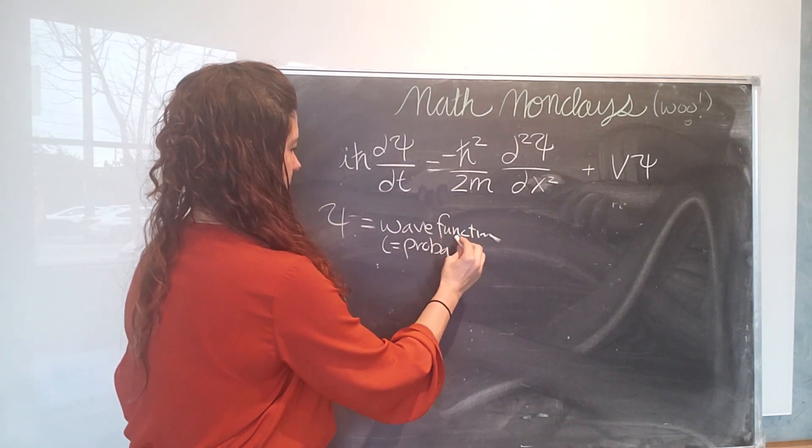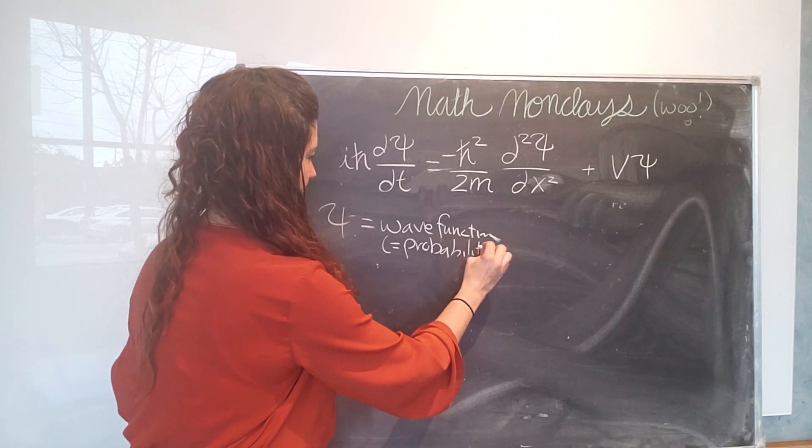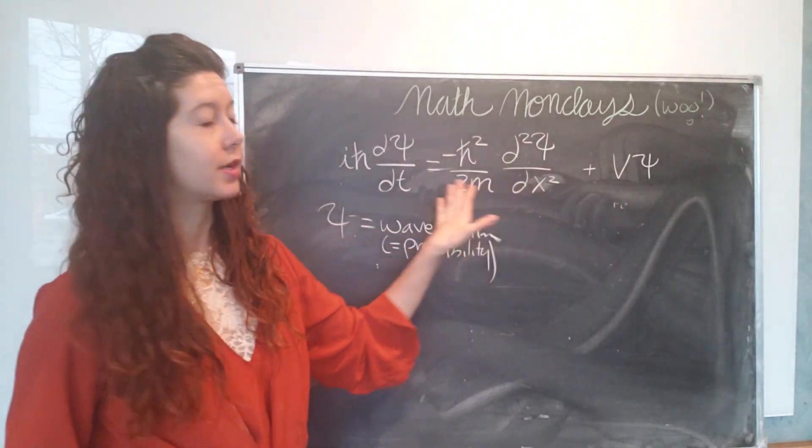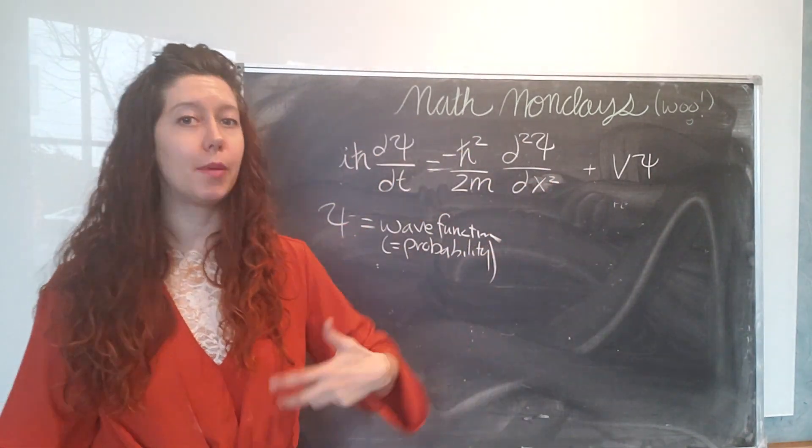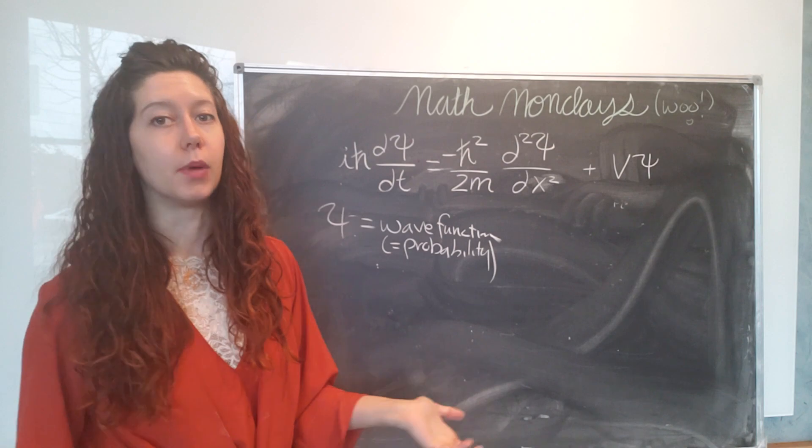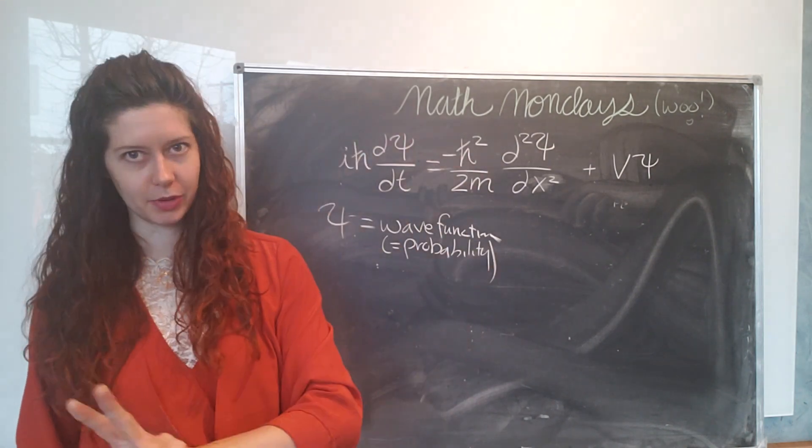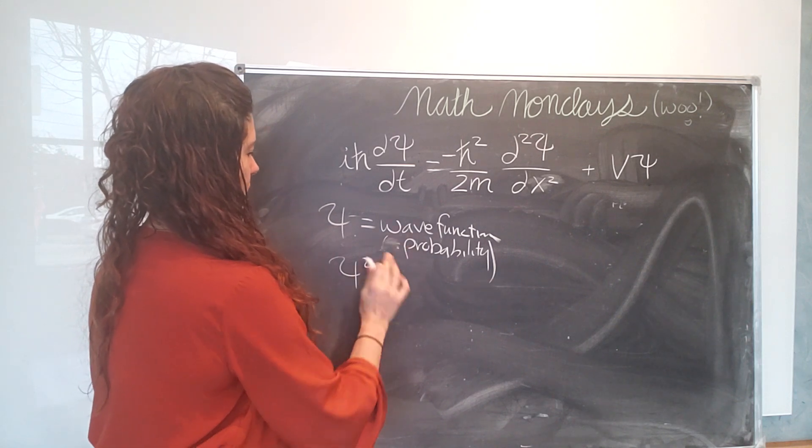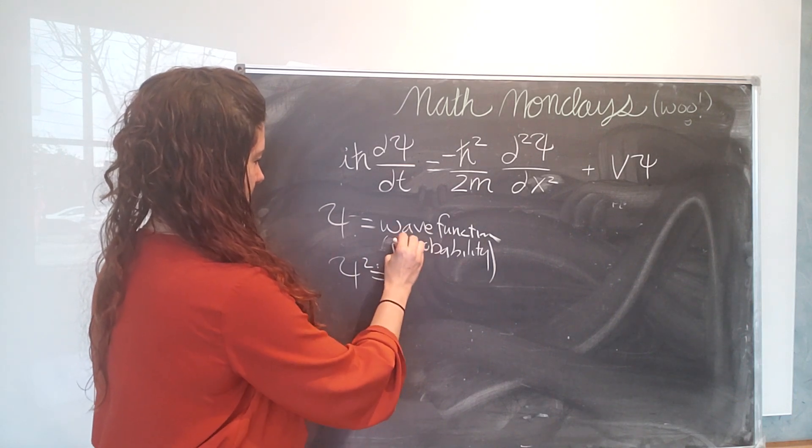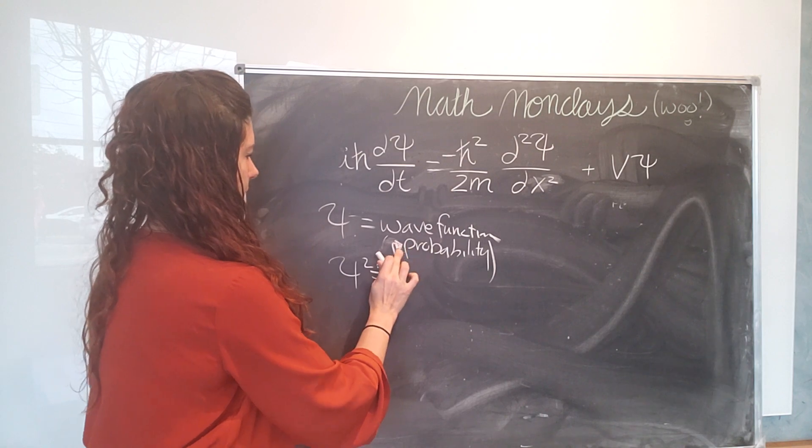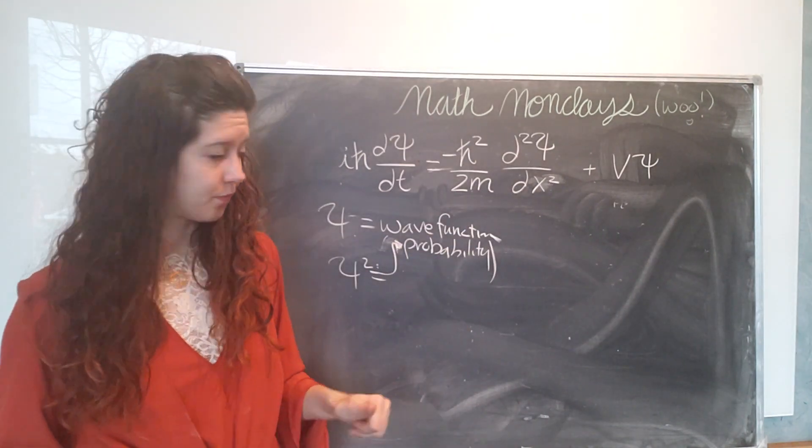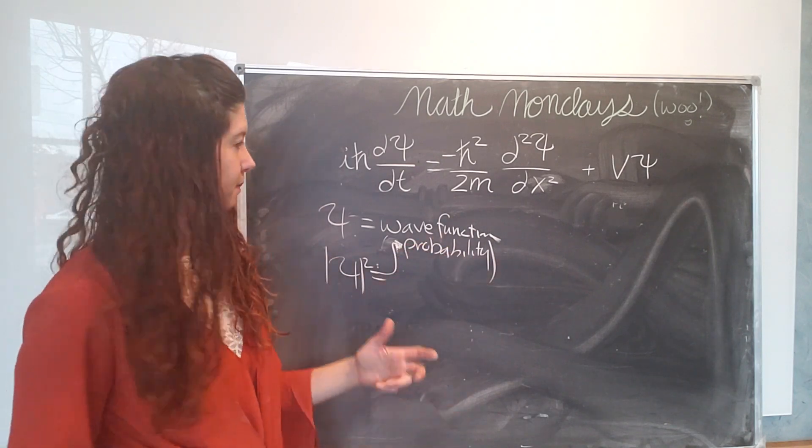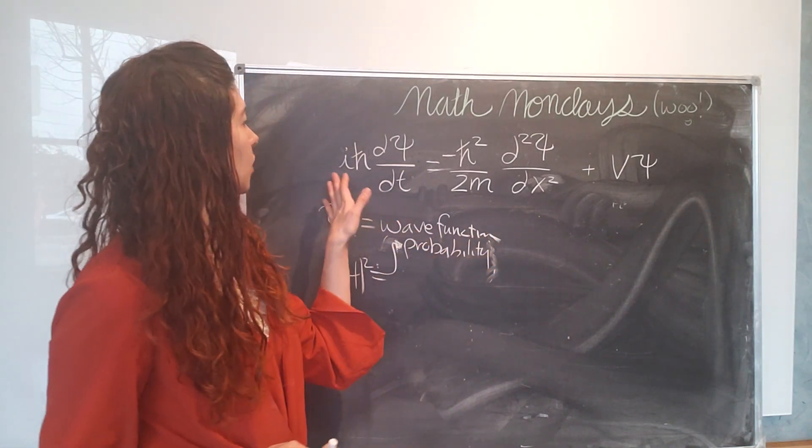So this is a probability. Okay, so the star of our equation is the wave function which is the probability of finding the particle, the shape of the probability of finding a given particle. It's actually the psi squared equals the probability. I don't want to confuse you too much but the wave function is the shape of the probability. The wave function squared is the actual probability.